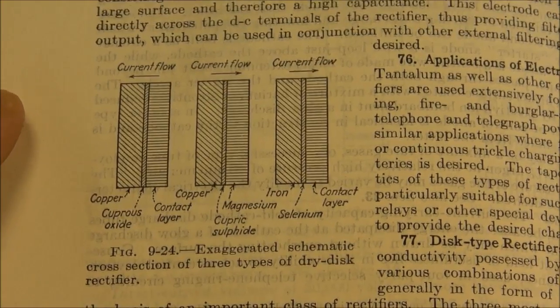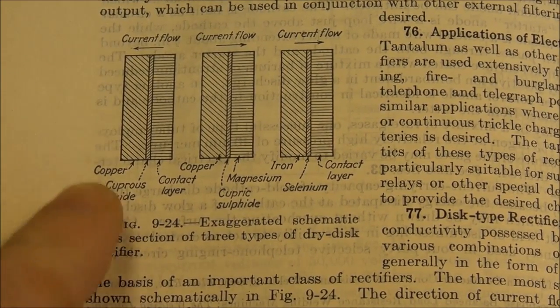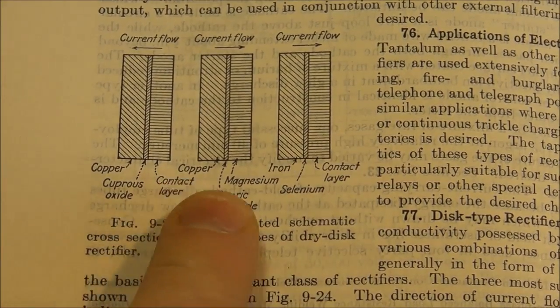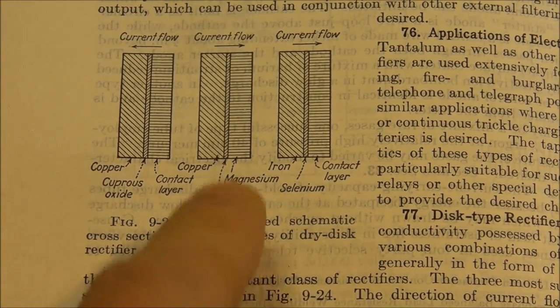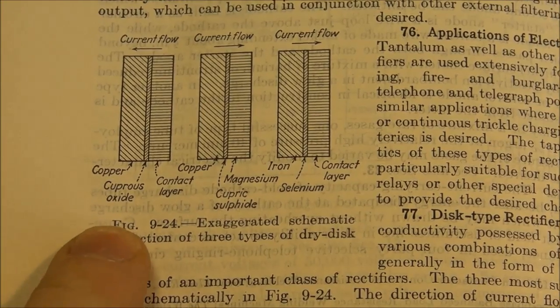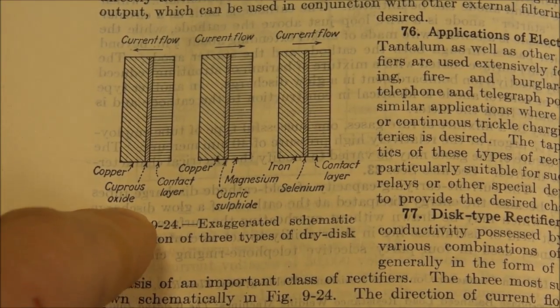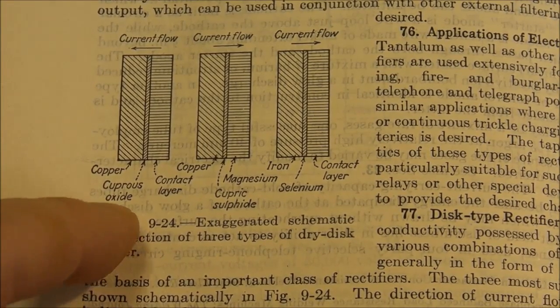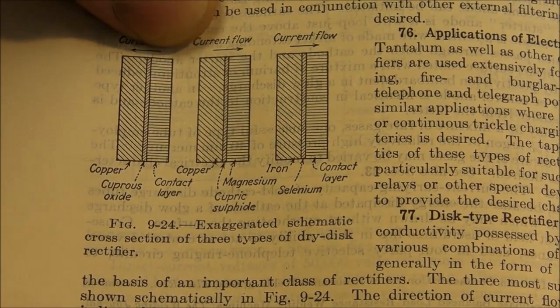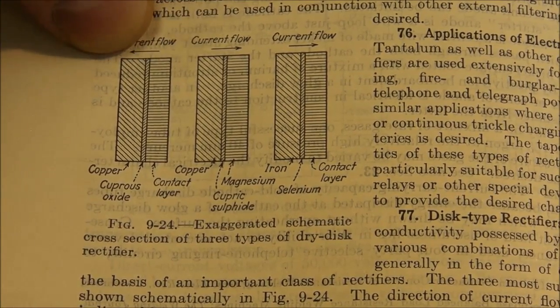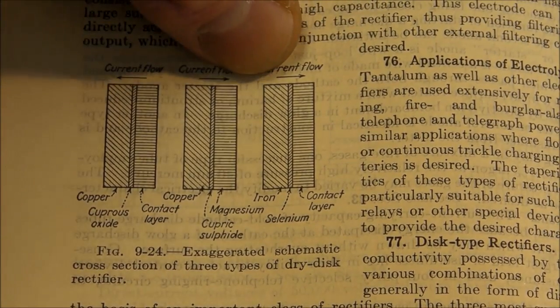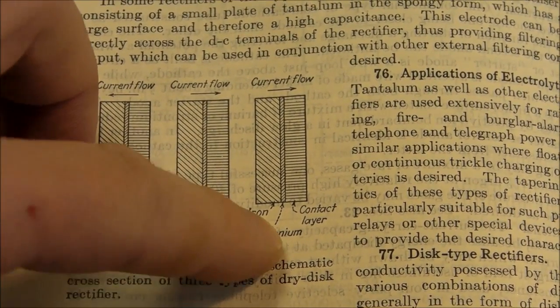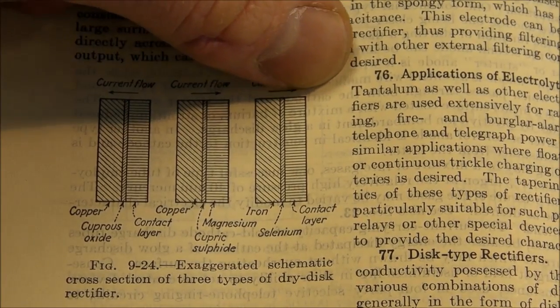Here's an example where they talk about the three basic types of metal disc rectifiers that they used. Here's the copper oxide, here's the selenium, and here's another one I've never seen - some kind of magnesium and cupric sulfide. For the copper oxide rectifier, the positive current flow goes from the oxide layer to the copper, and for the selenium, it goes from the metal disc (in this case iron, but aluminum is also very common) to the selenium layer.